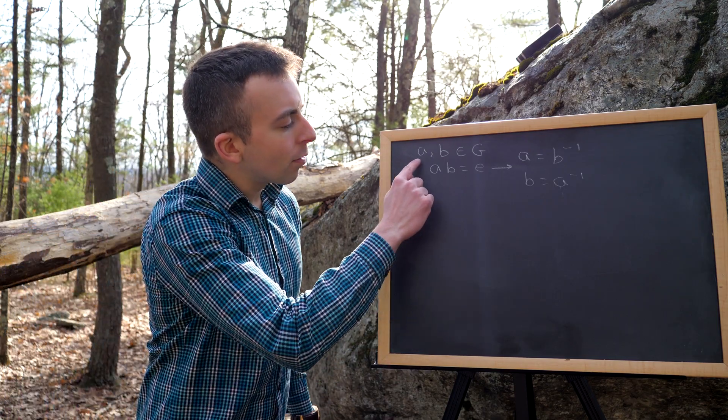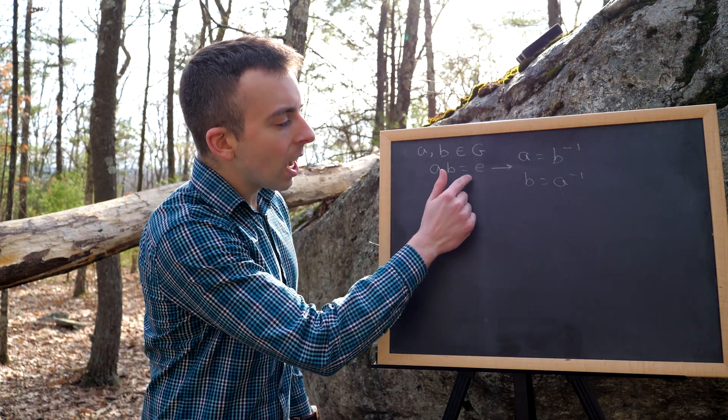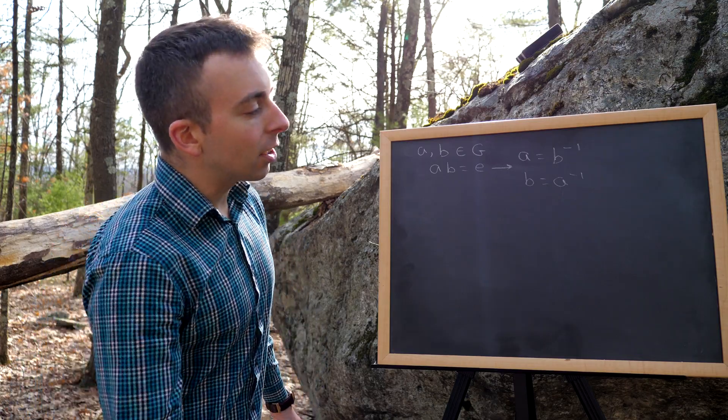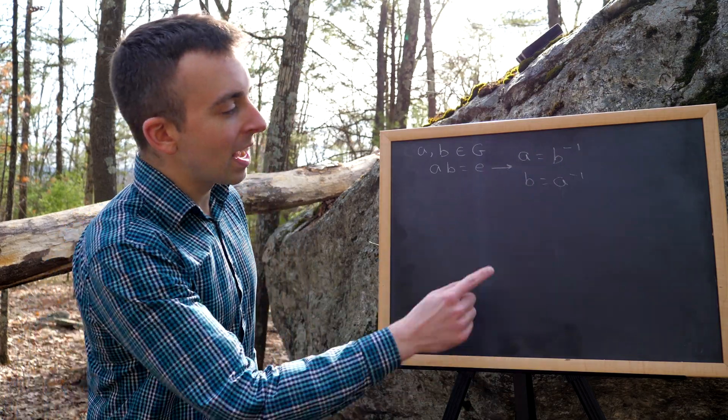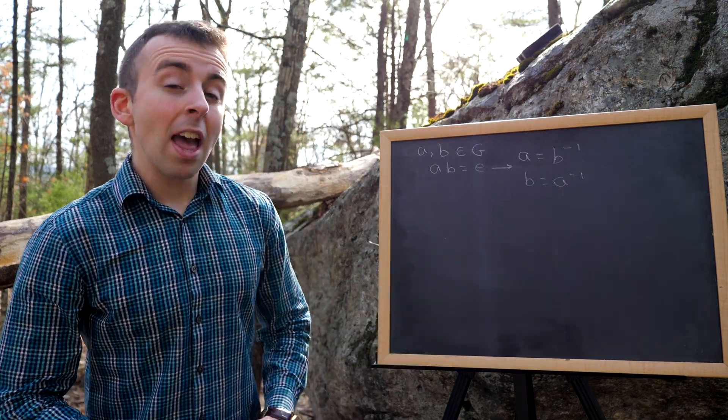We want to prove that if we have two group elements, A and B, and we know that A times B is the identity element E, then we can conclude that A and B are inverses of each other. So A is the inverse of B, and B is the inverse of A.